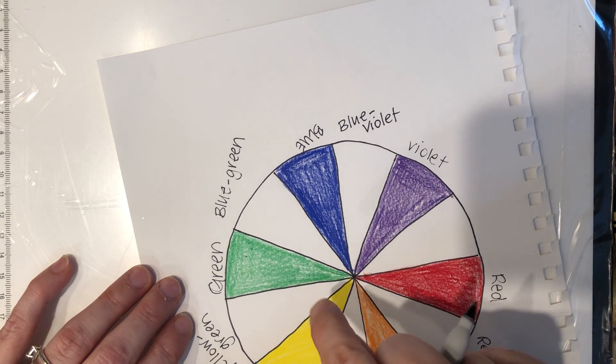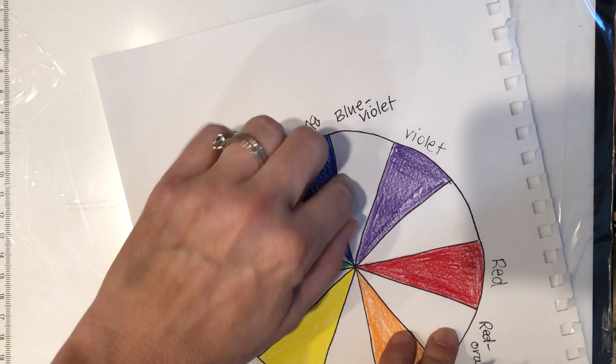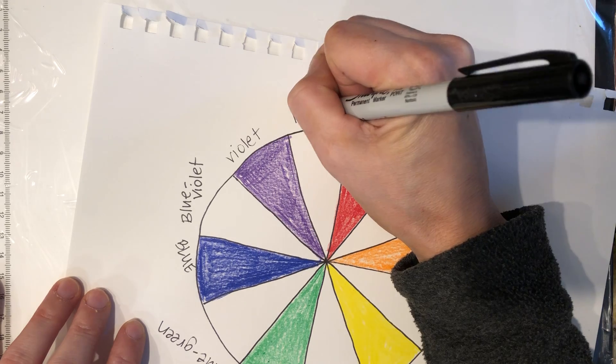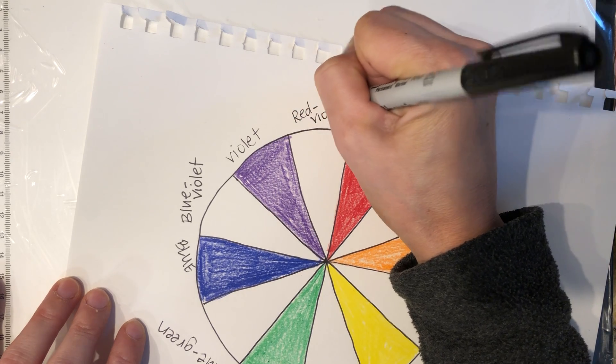If you've ever heard of Roy G. Biv, the I, indigo, is blue-violet. It's also the color of, like, jeans. And then between violet and red, red is the primary, so the name of the color is red-violet.